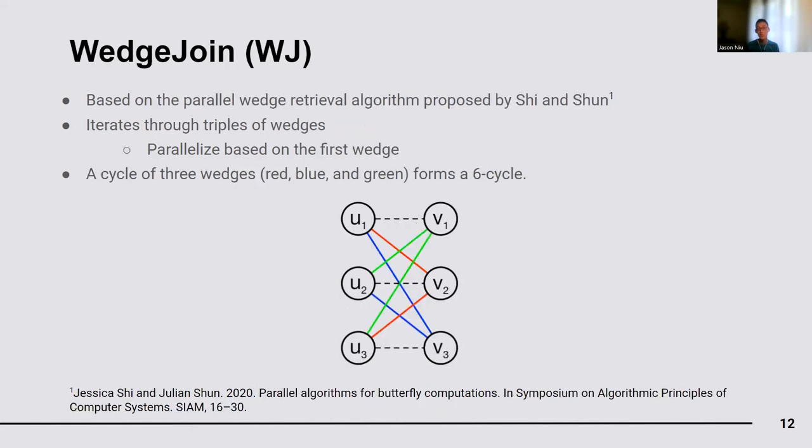Prior work counted butterflies in parallel by aggregating wedges which are two-paths. We can do a similar thing with induced six-cycles. Since induced six-cycles are composed of three overlapping wedges, we can reduce the cost of computation by operating on wedges rather than nodes. Our second algorithm, WedgeJoin, goes over triples of wedges and counts the ones that form an induced six-cycle. In this figure, the triple of wedges—green, red, and blue—form a six-cycle. Similar to NodeJoin, we have to account for the lack of certain edges represented as these dotted black lines to ensure inducedness. We can parallelize this algorithm based on the starting wedges.